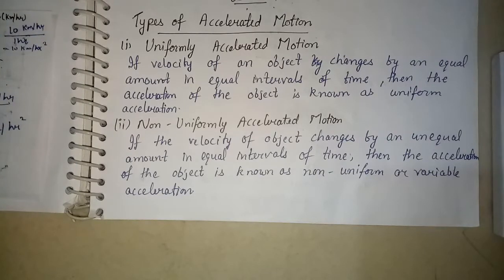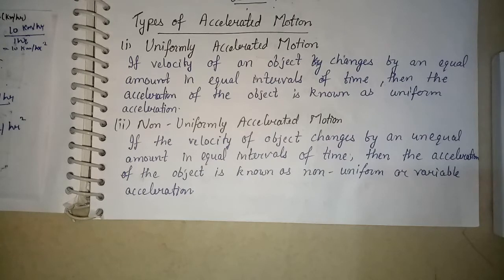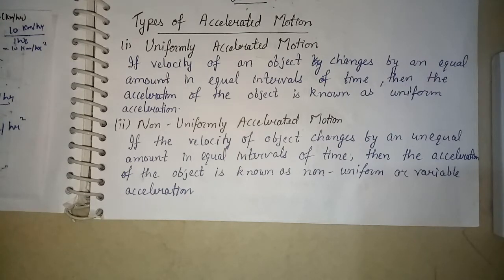If a body is changing in its velocity, we say that the body is accelerating. We have classified two types of accelerated motion: one is uniformly accelerated motion and the other is non-uniformly accelerated motion. So first let us discuss uniformly accelerated motion.